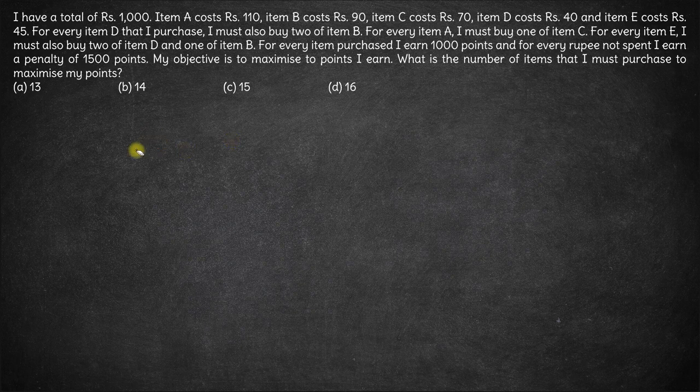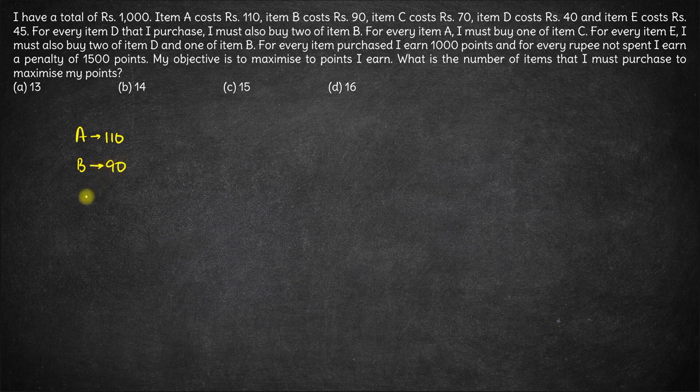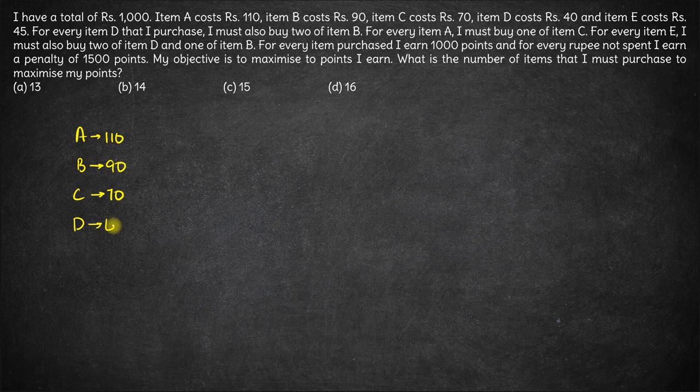Hi, here we have a problem. I have a total of 1000 rupees and there are 5 types of items. Item A costs 110 per item, B costs 90 per item, C costs 70, D costs 40 per item, and E costs rupees 45 per item.